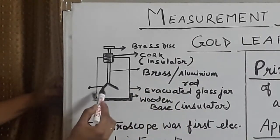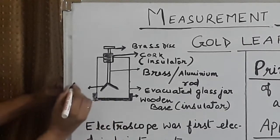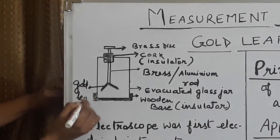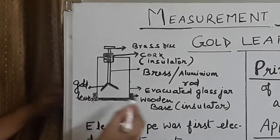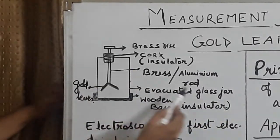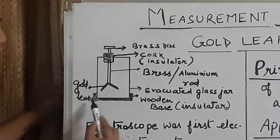Sabse upar brass disc, jo ki ek metal ya alloy le sakte hai. Then, we have a cork, this is cork, jisko humne purposely insulator choose kiya hai. Then, this rod is brass or aluminum. Brass or aluminum, ye rod hai. Then, these are the leaves, jo gold ke leaves hai, thin leaves hai, patle. Ye jo jar hai, evacuated hai, glass jar is evacuated. And the base is wooden base, of course an insulator.